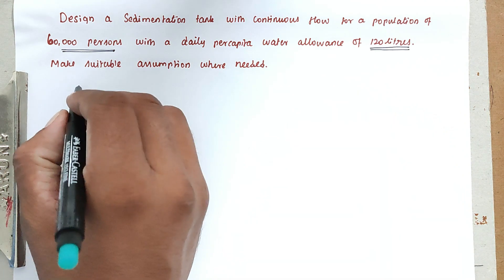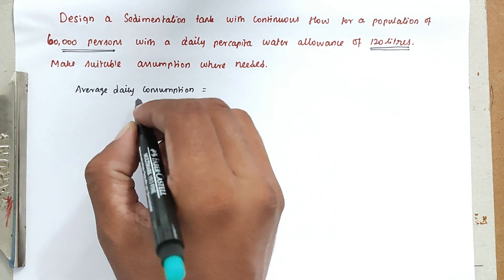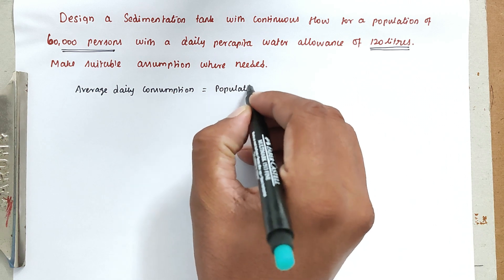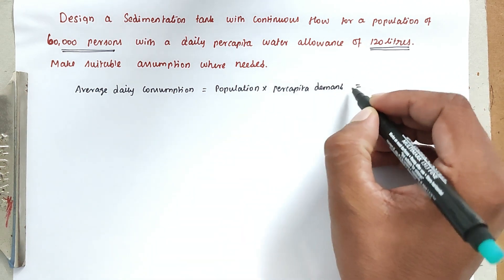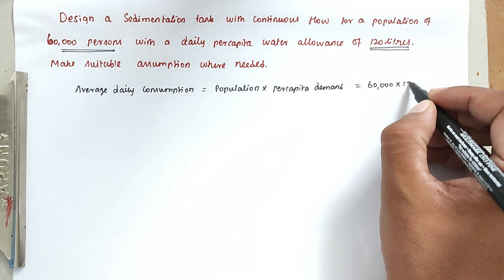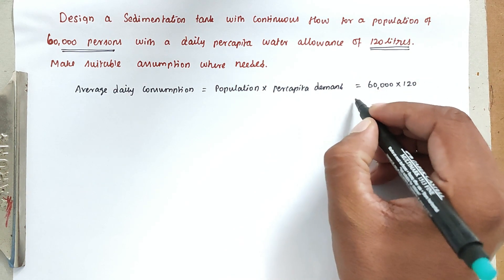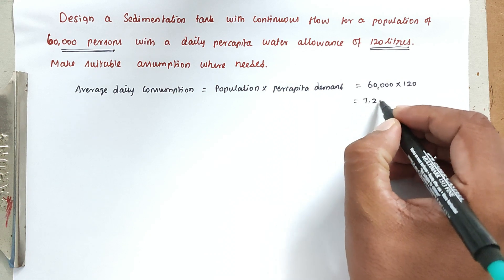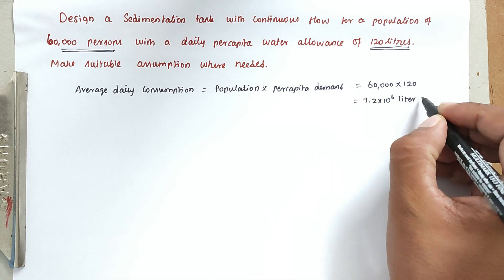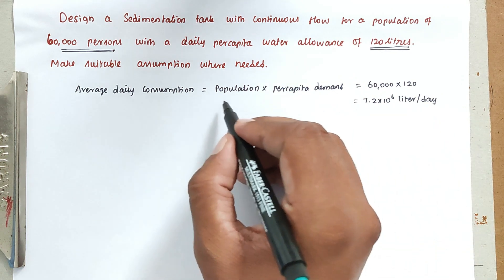Now the daily average consumption equals population multiplied by per capita demand. The population is 60,000 and per capita demand is 120 liters, giving us 7.2×10⁶ liters per day. This is the quantity of water — or wastewater — generated.